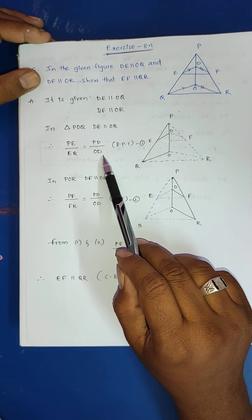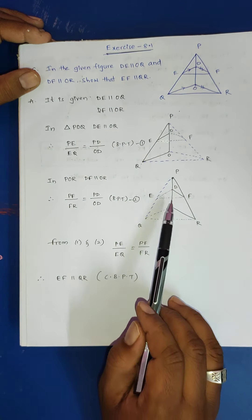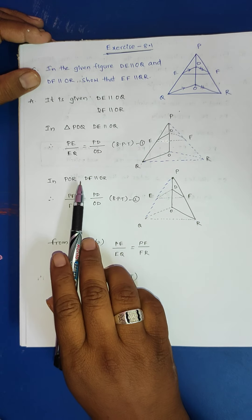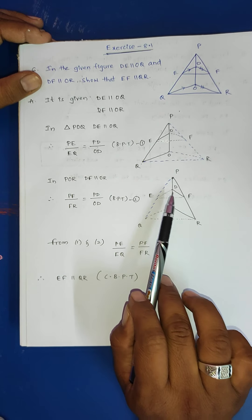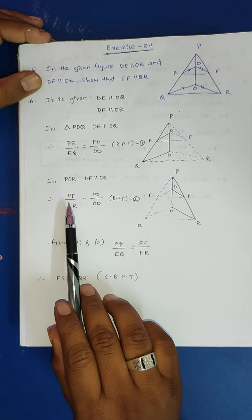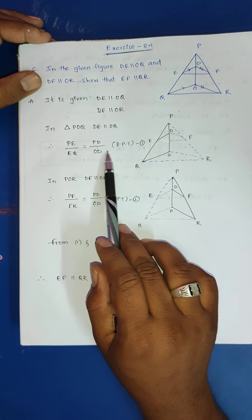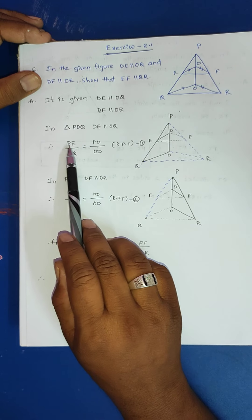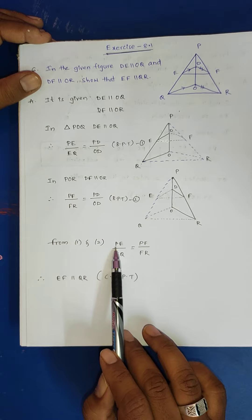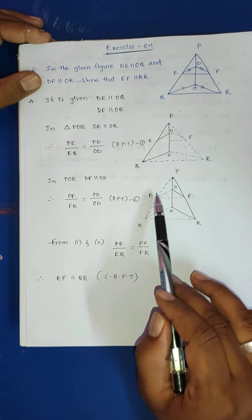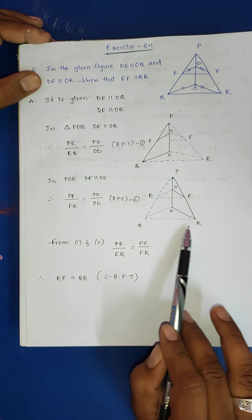Using the basic proportionality theorem, the ratios are in the same ratio. In triangle POR, DF is parallel to OR. So PF by FR equals PD by OD — this is the second result. From result one and two, PD by OD is common. Therefore PE by EQ equals PF by FR. This means EF is parallel to QR in the biggest triangle PQR, by the converse basic proportionality theorem.